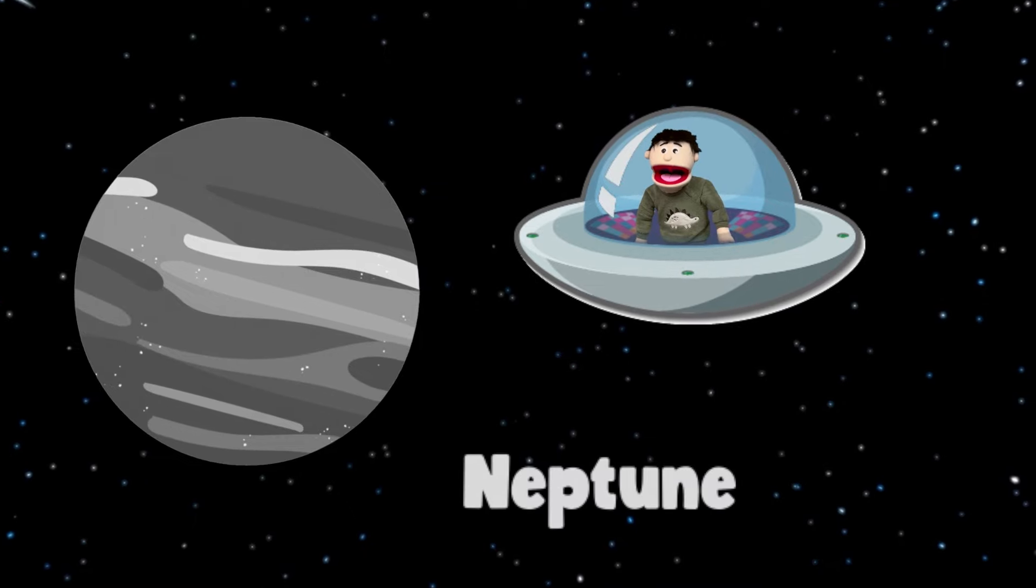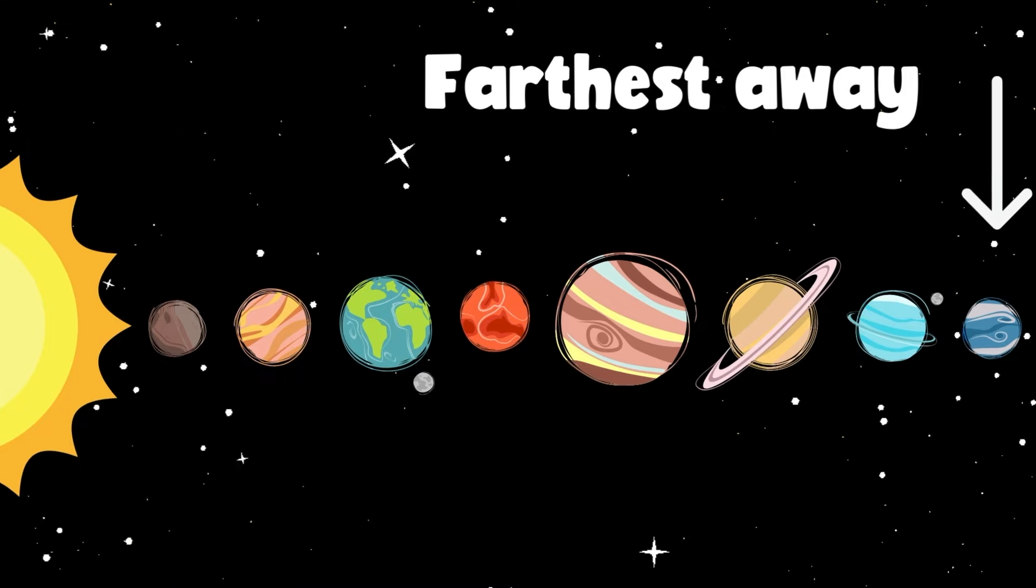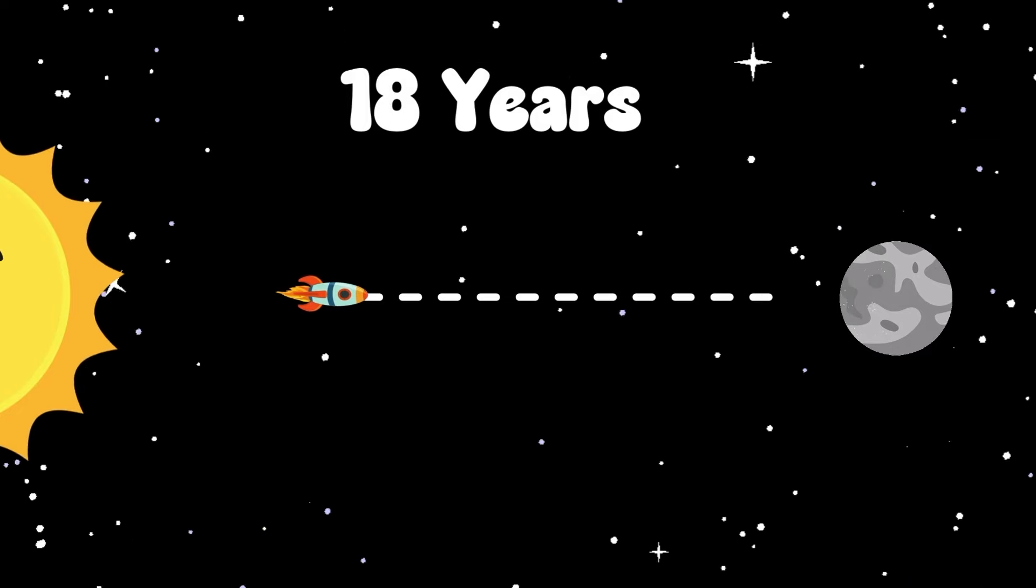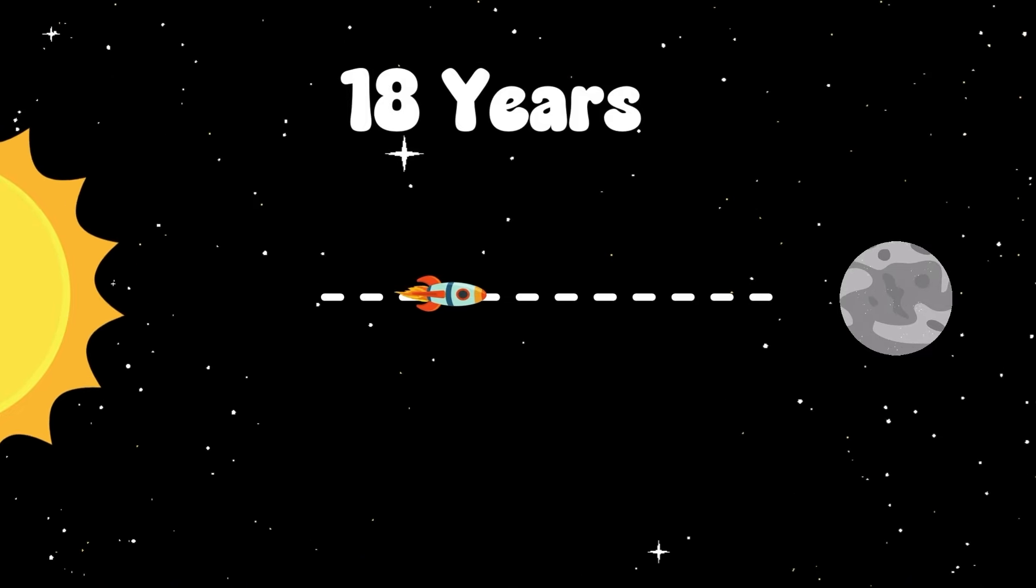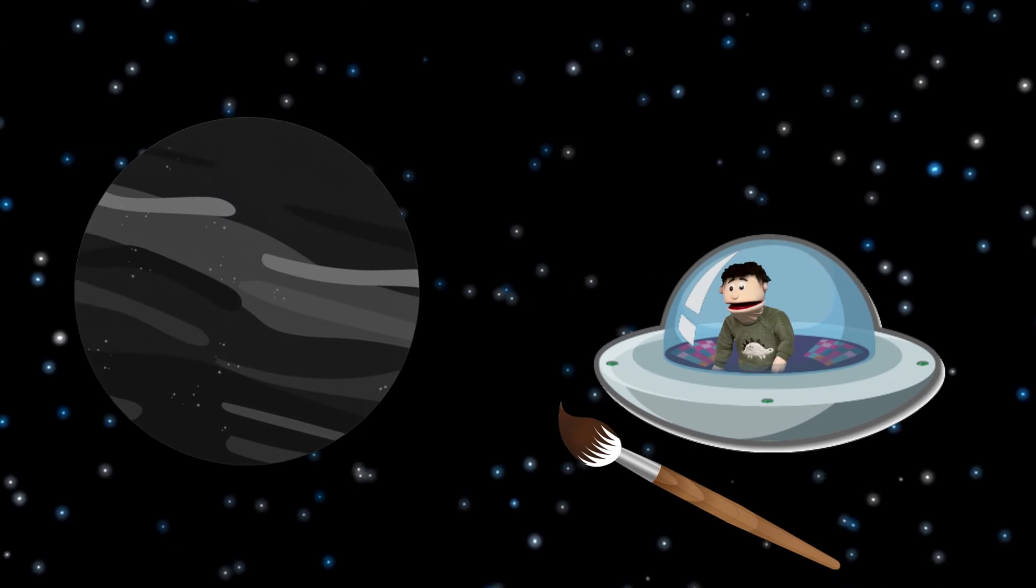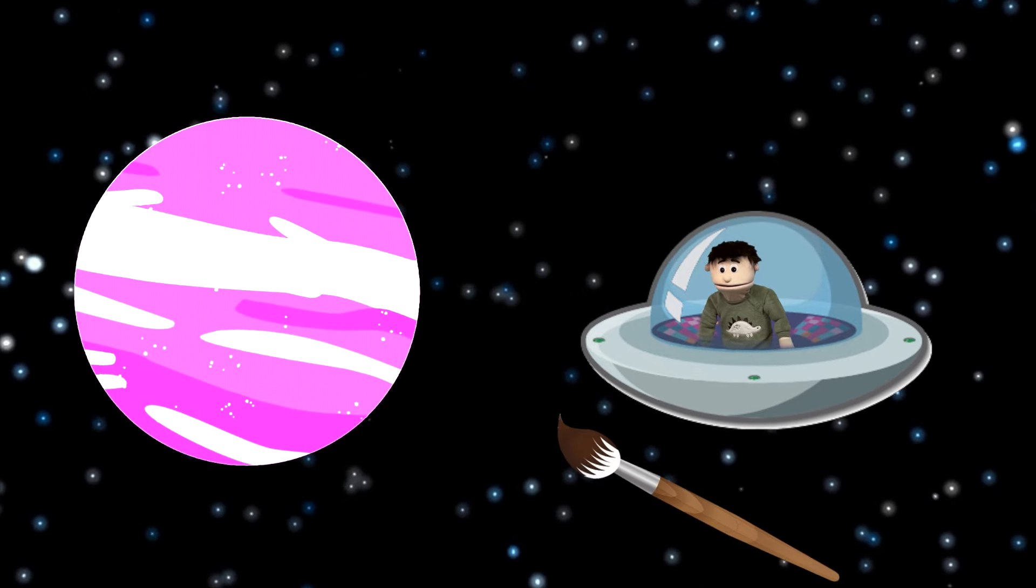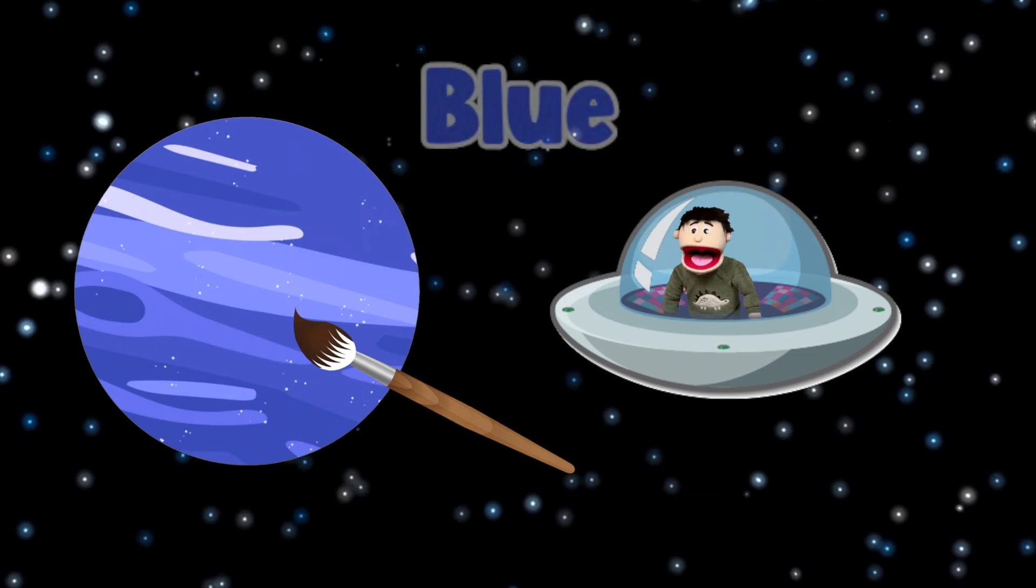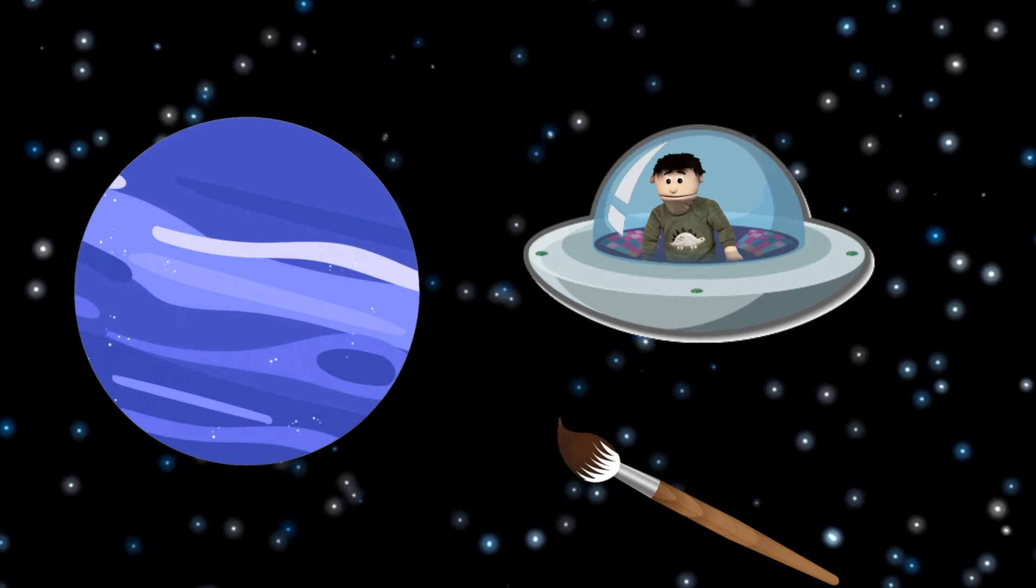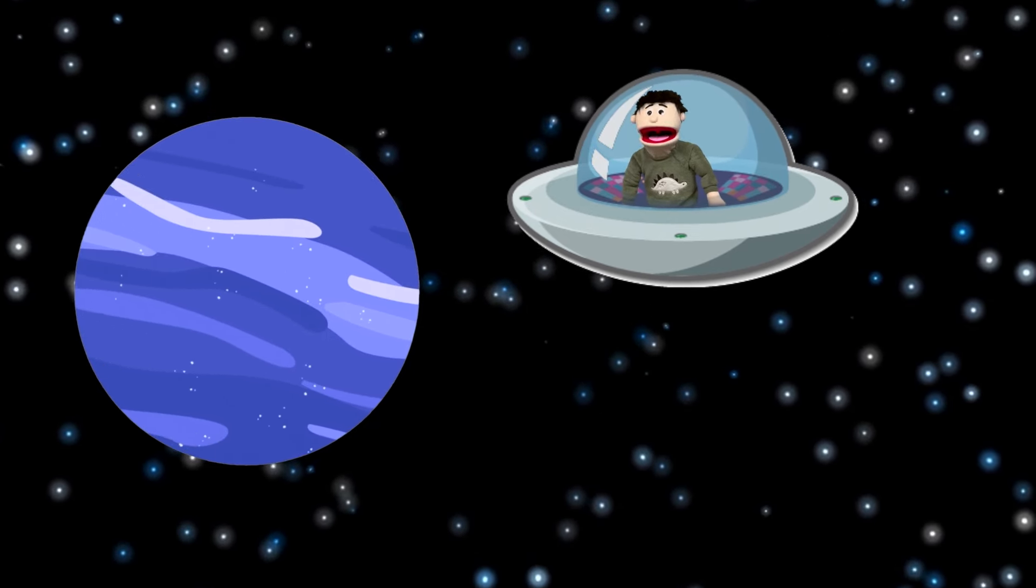This planet is Neptune! Neptune is the farthest planet away from the Sun! It would take 18 years to get to Neptune! That's a long time! Is it black? No, it's not black! I think it's pink, right? No, you're right! You're right, it's blue! Wow, look how pretty that planet looks! That is so pretty! That's probably my most favorite planet!